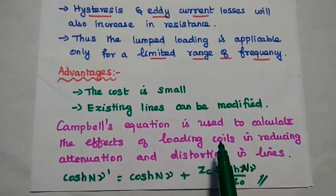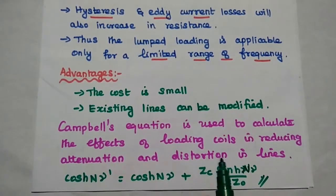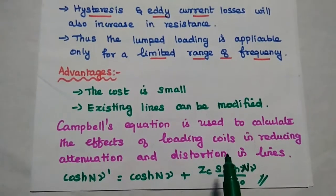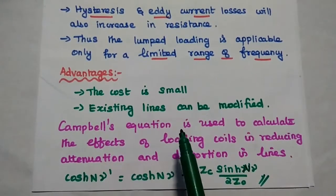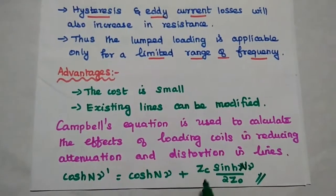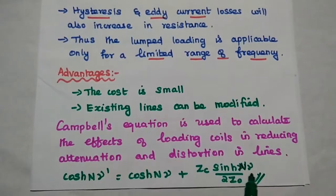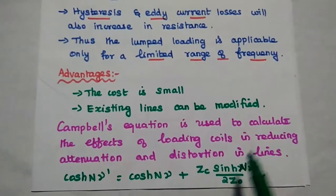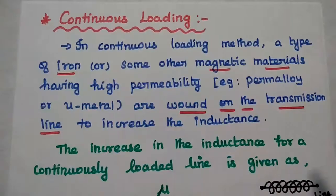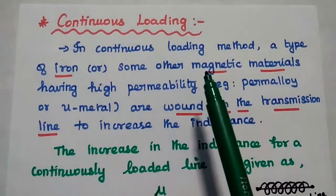The effect of loading coils in reducing attenuation and distortion can be calculated using Campbell's equation. We are going to derive this equation in the next lecture video. This is a very important equation.